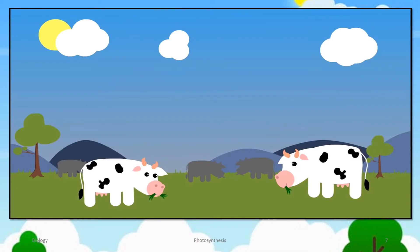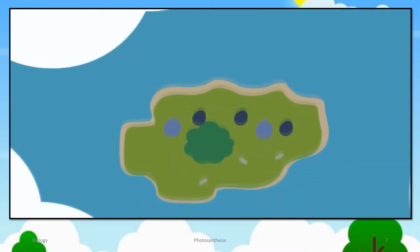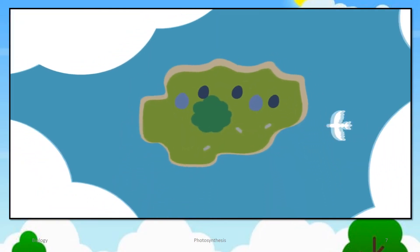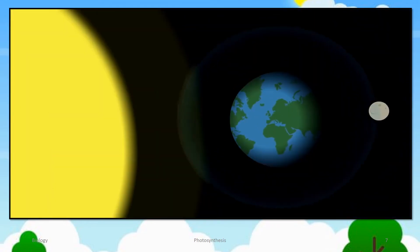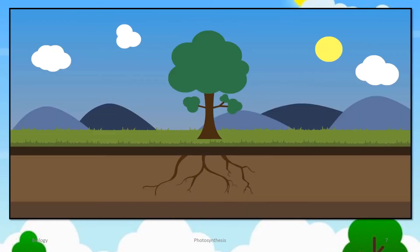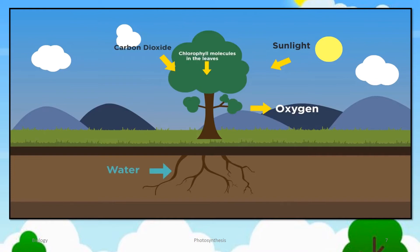Not only are photosynthetic organisms the main producers of food, but without photosynthesis, Earth's atmosphere would lose its oxygen. The general gist of what happens in photosynthesis is that green plants and algae trap light from the sun to fix carbon dioxide with hydrogen and water. This makes organic compounds which then provide food for not only the plant itself but also all animals.